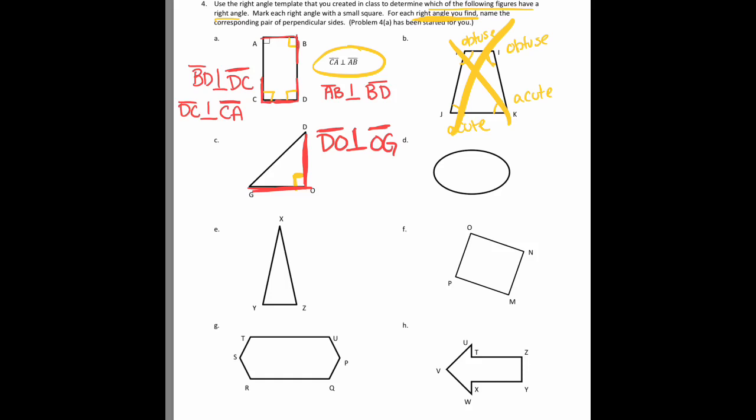On D, there are no sides per se because it's an oval, so there's no angles to be made. So that doesn't count. On E, I just see two or all three are acute angles, so that one doesn't count.